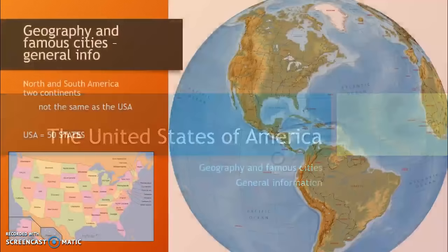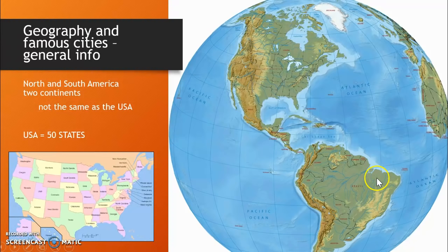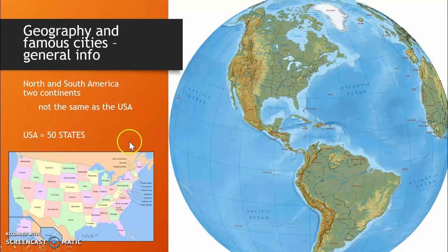The continent America is split up into North and South America. Both of those names have nothing to do with the USA. The United States of America are the 50 states that form the country. The USA is part of the continent of North America, together with Canada above it and Mexico below it.